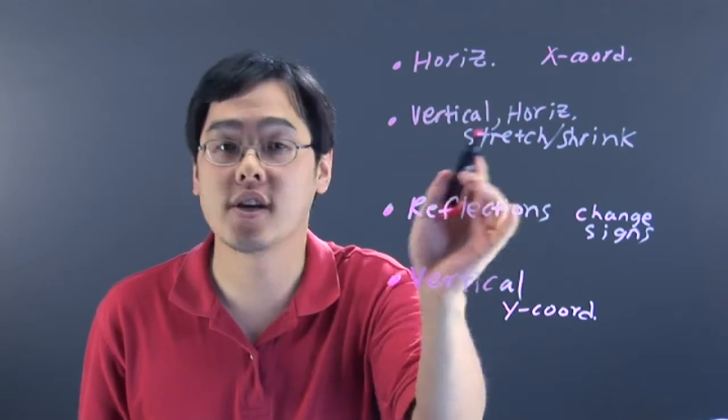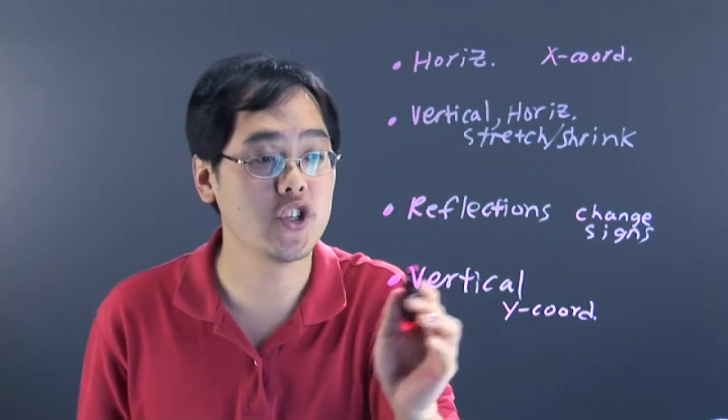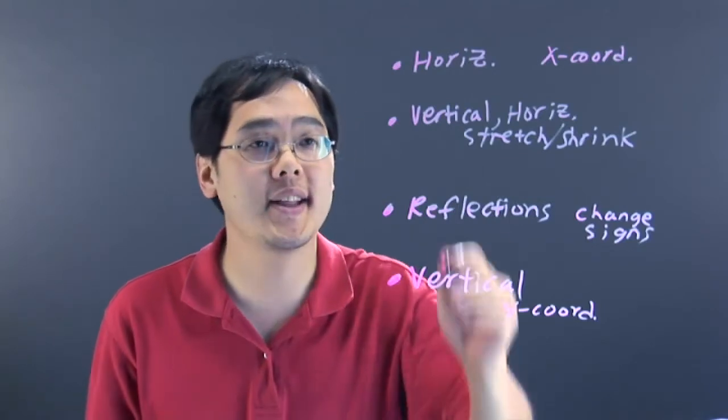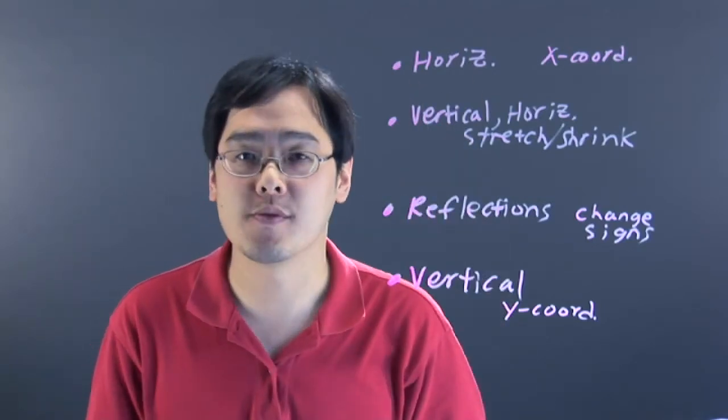Horizontal, vertical, horizontal stretching and shrinking, reflections, and vertical. So I'm Jimmy Chang, and that's an overview of how to map transformations in math.